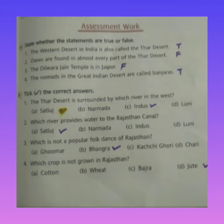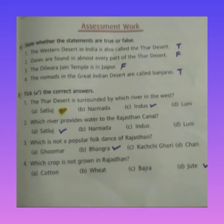Nomads are found in the Great Indian Desert — they keep moving from one place to another in search of food and shelter. These nomads are also called Banjaras, so this statement is true. Next exercise: choose the correct answer. We have four options and we have to choose one correct answer.